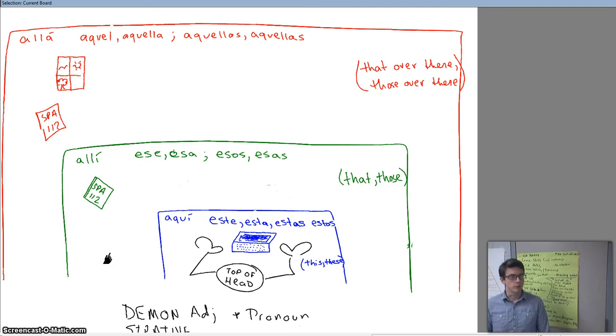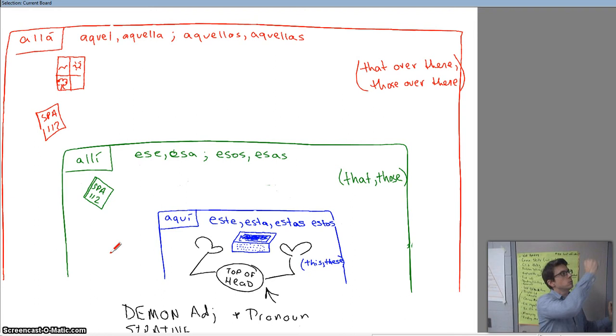Okay, here are your demonstrative adjectives and pronouns. You will use these things based on something's location in reference to you. Notice that I've put you into the image. There you are. There's the top of your head right there, and there are the items in front of you. You can see you have two zones. The first zone that is in blue is labeled as aquí. You've got the second zone that is green and it is labeled allí. And you've got the last zone, the red zone out there, and it is labeled allá.